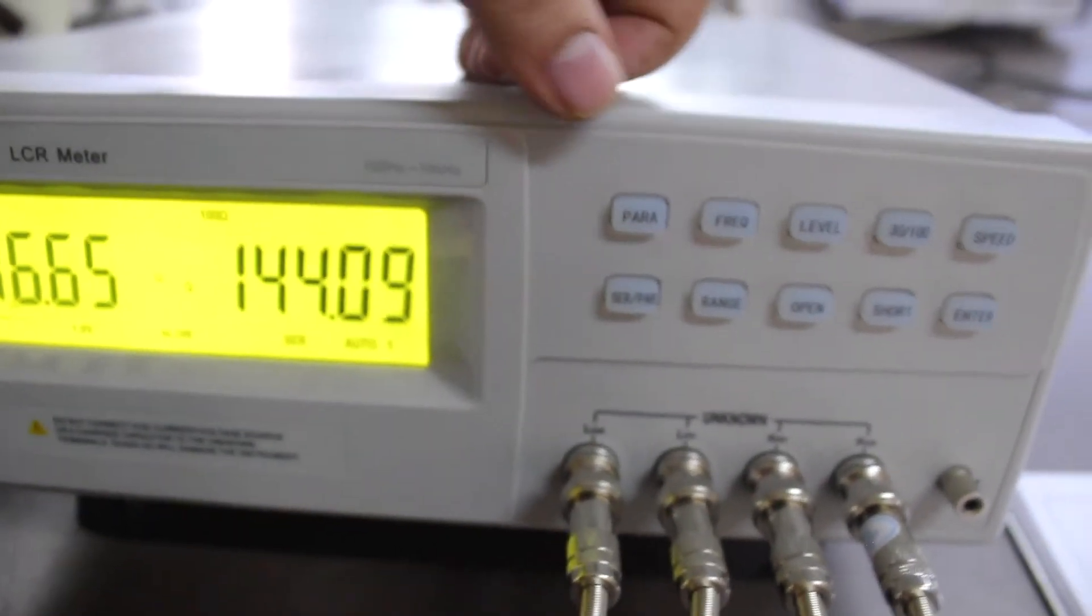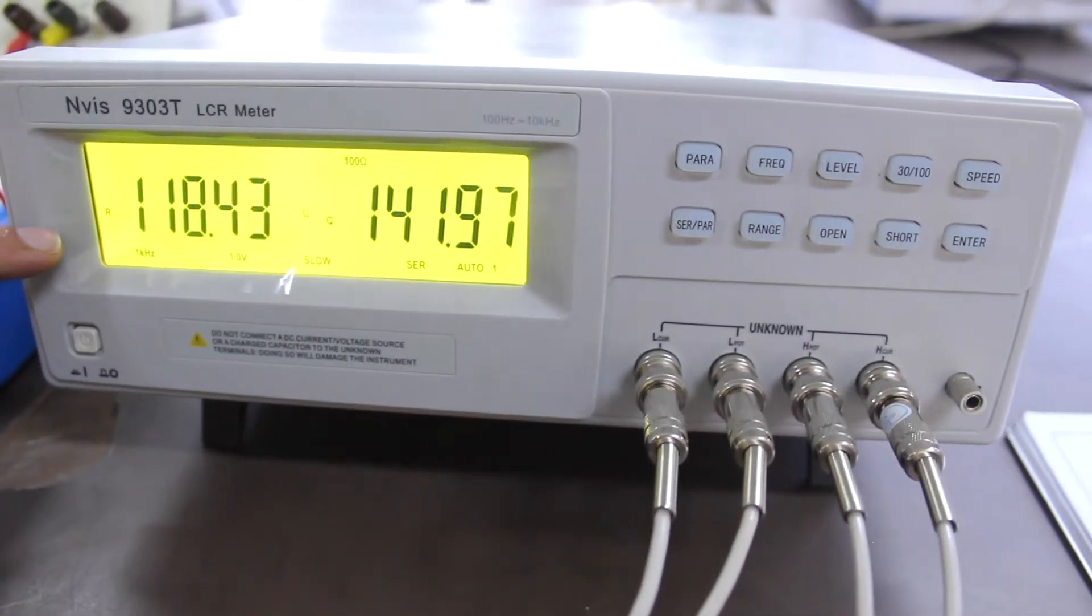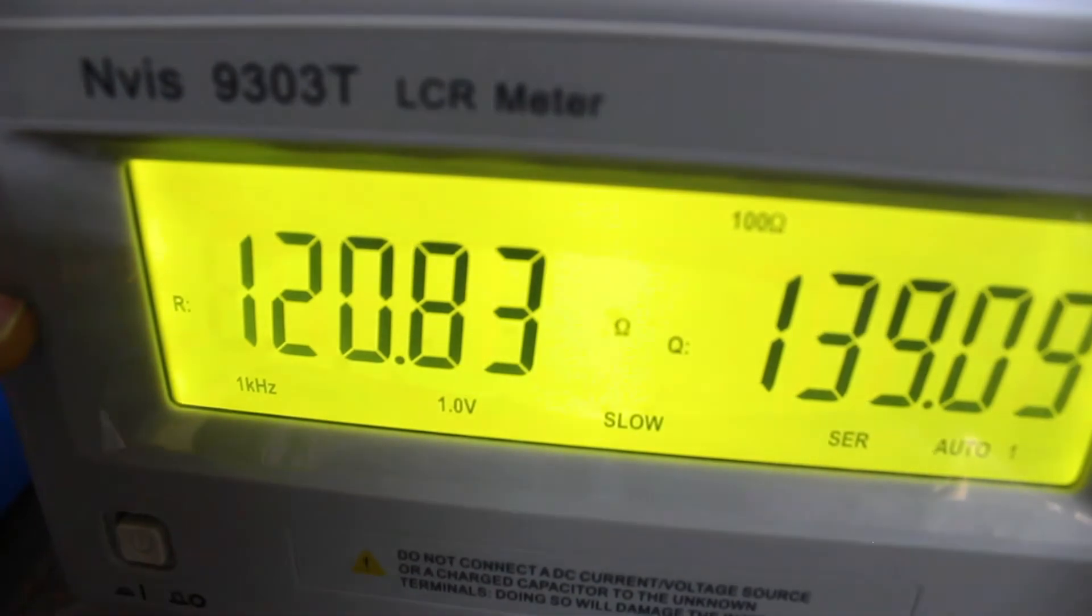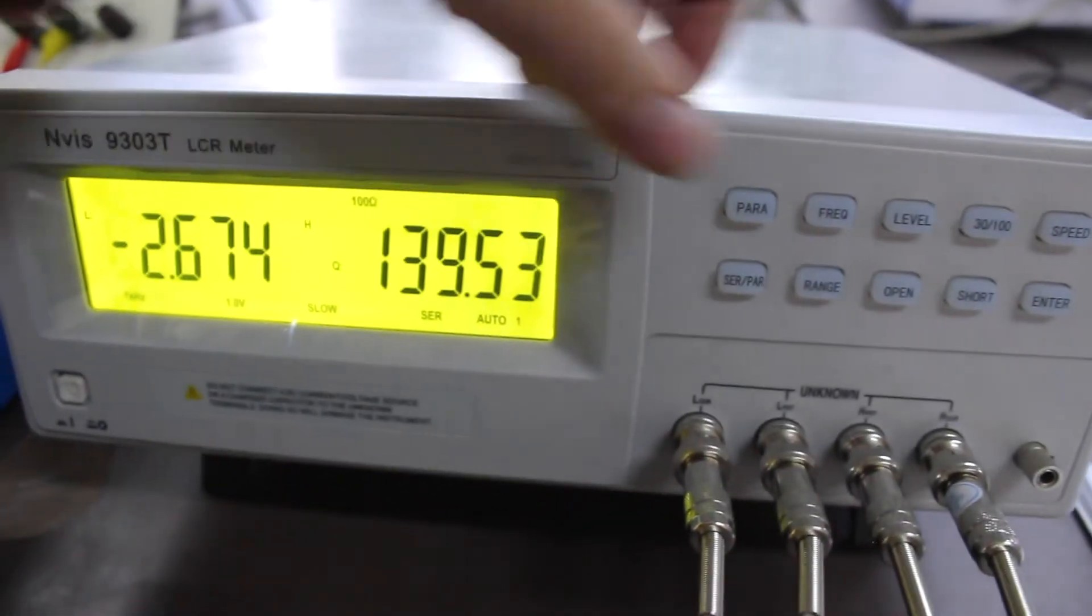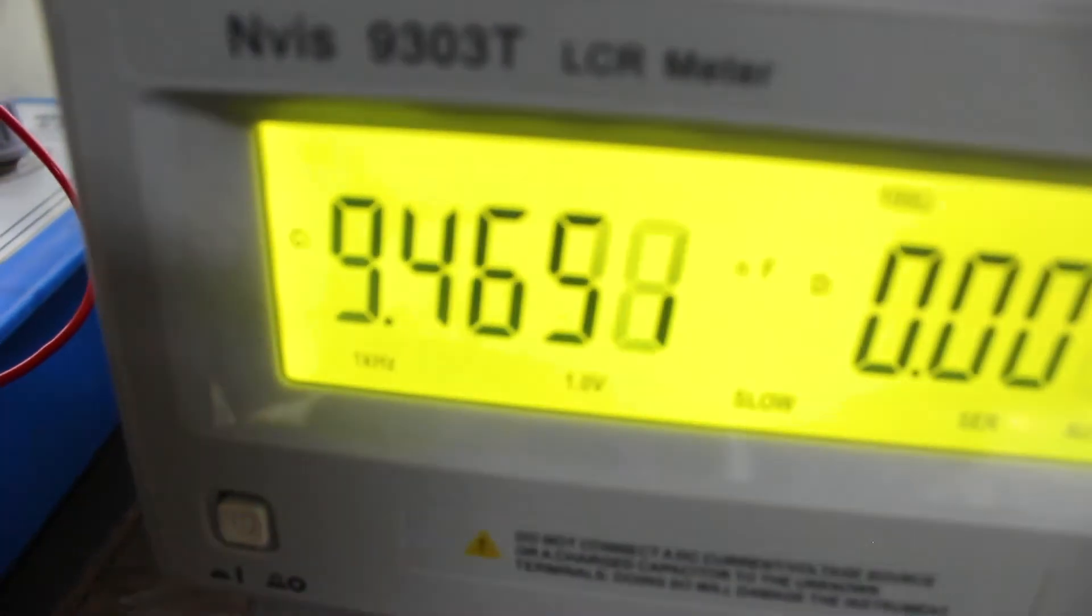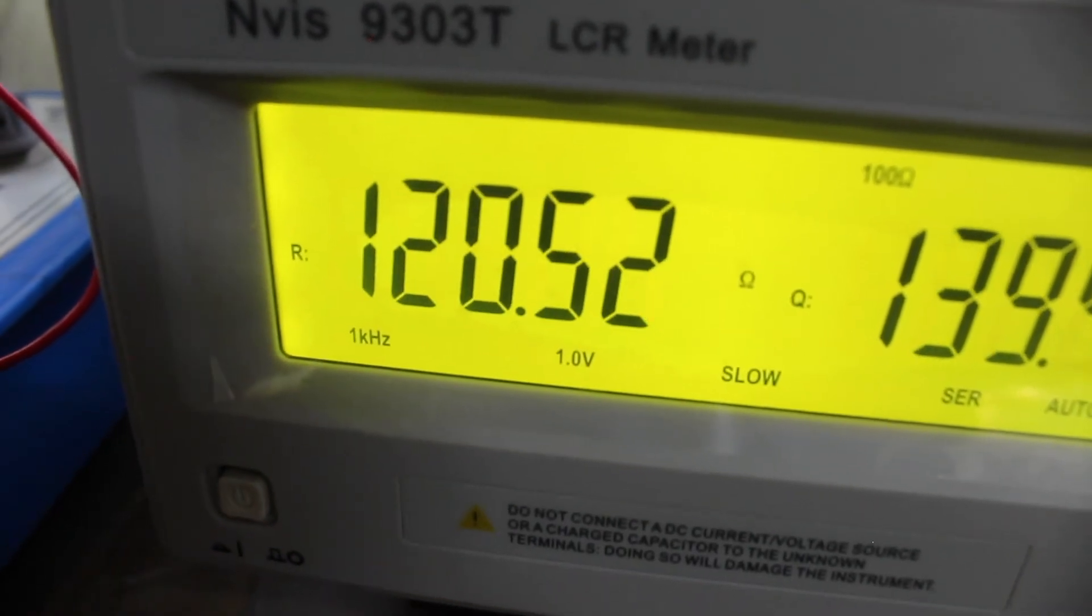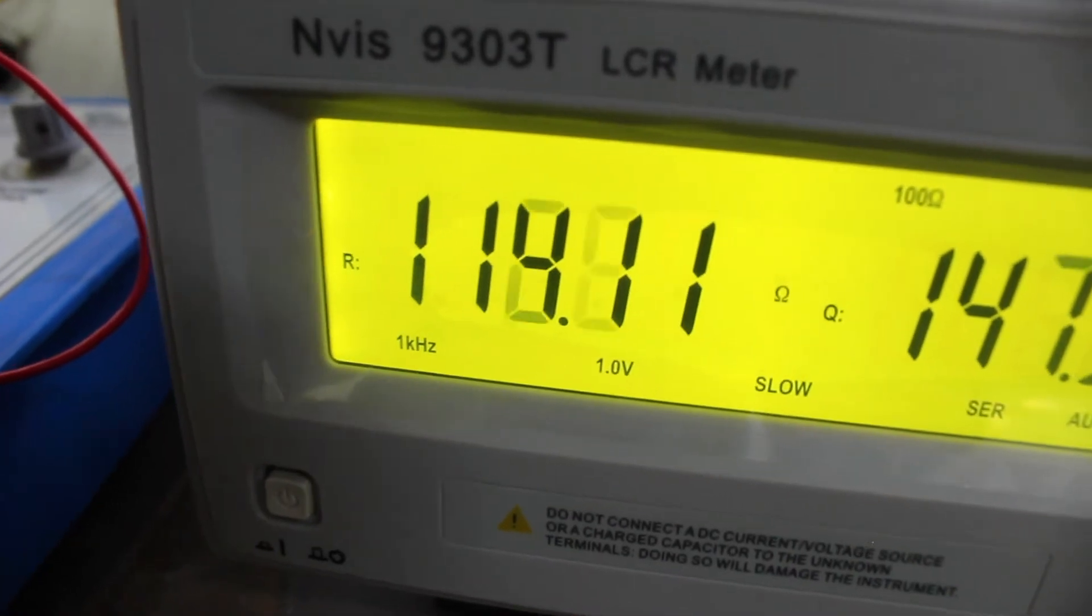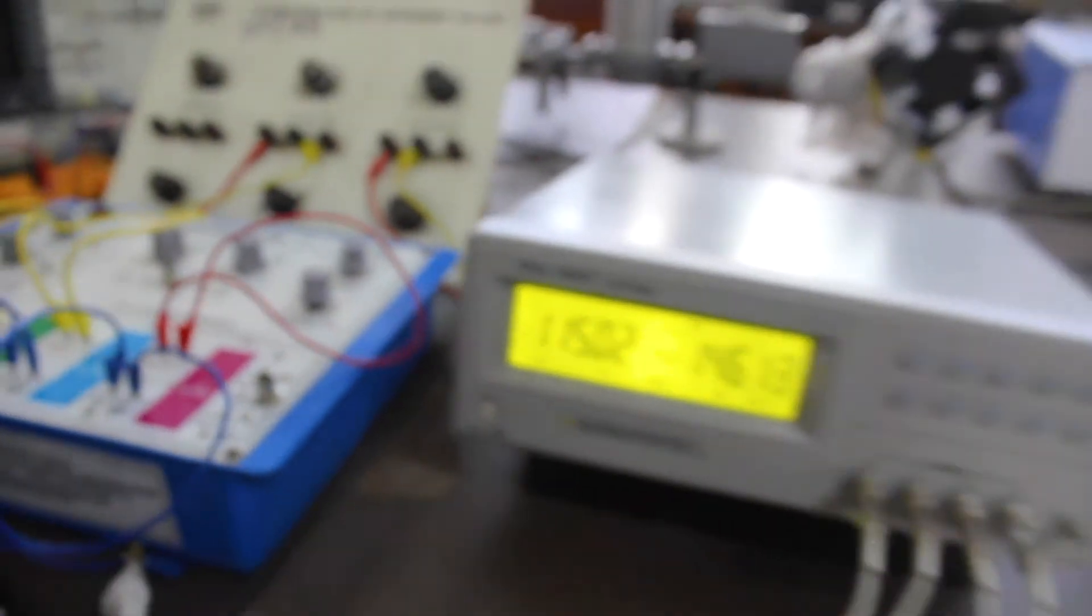So I will note down this value of C and also I can note down the value of R which will give us the value of G, which is the parallel conductance G and parallel capacitance C. We will note that value here.